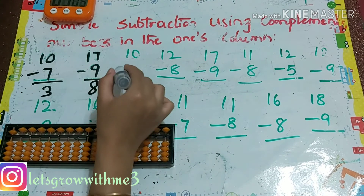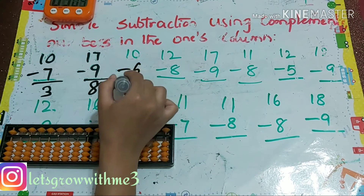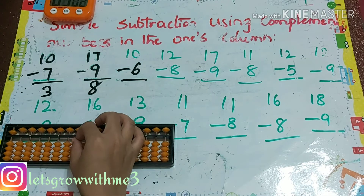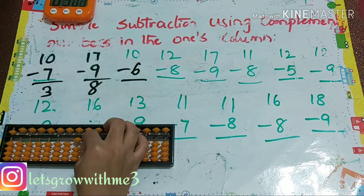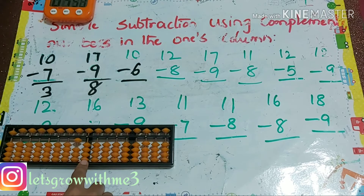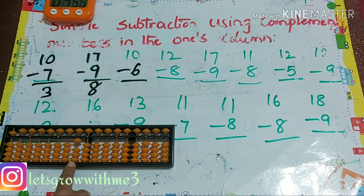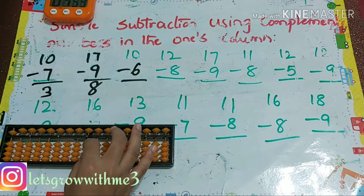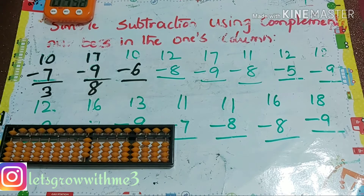Next problem: 10 minus 6. How to do minus 6? I can't do it here, so I'm going to the left side first — in the tens column: minus 10, plus 4. Our answer is 4.